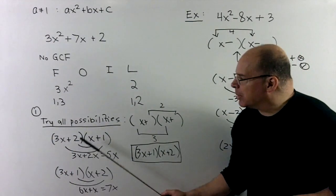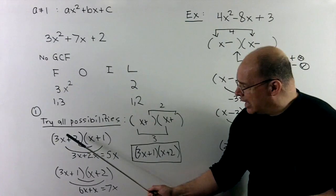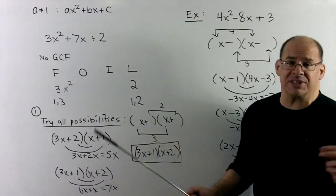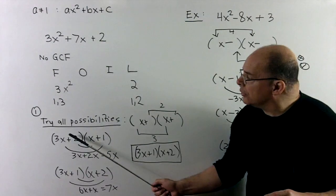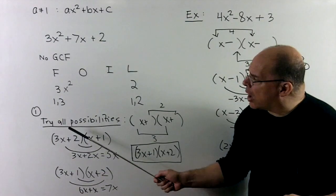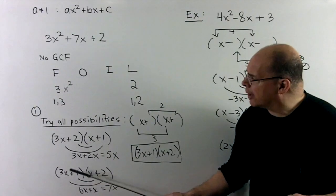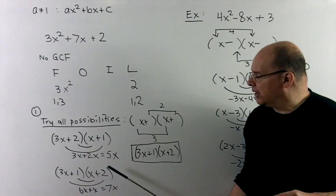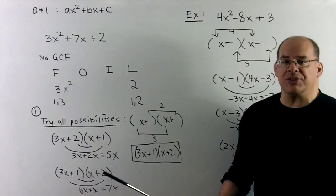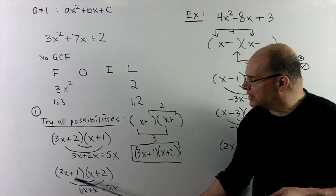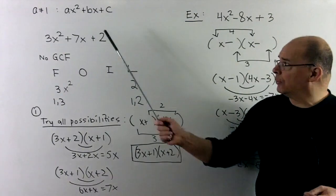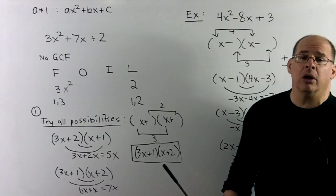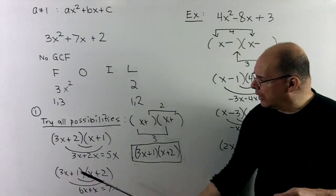Trying 3x plus 2 times x plus 1: outside plus inside gives 3x plus 2x, equaling 5x — not 7x. There are only two possibilities to check. Trying 3x plus 1 times x plus 2: outside plus inside gives 6x plus x, equaling the 7x we're looking for. So the answer is 3x plus 1 times x plus 2. You should FOIL that off to the side just to verify.